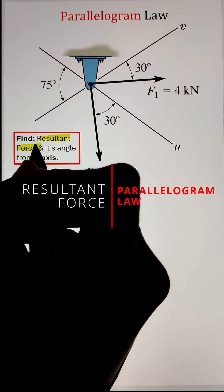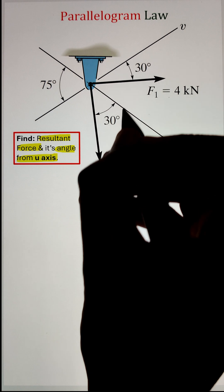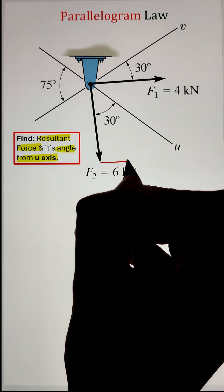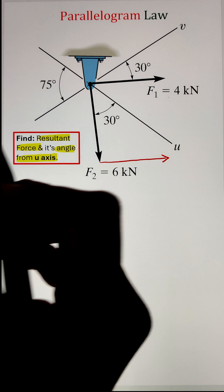In order to find the resultant force F1 and F2 and the angle it makes from a positive u-axis utilizing the parallelogram law, all we need to do is translate our force F1 downwards to the head of our force F2.